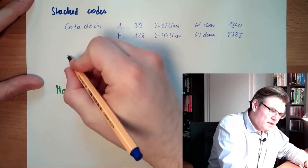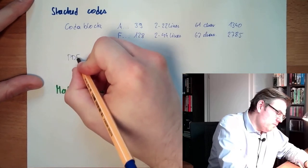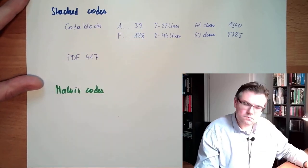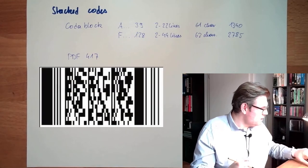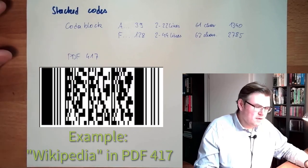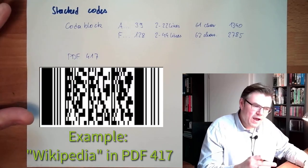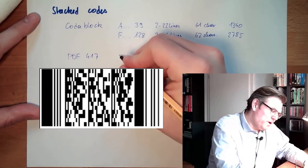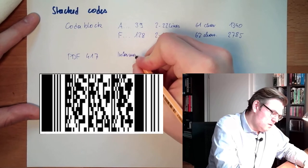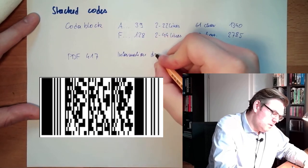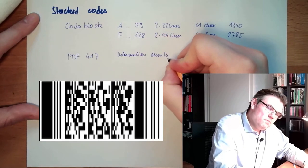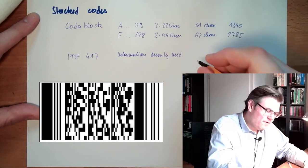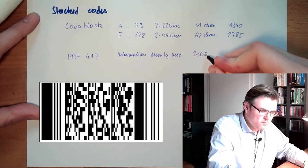Another form of stacked code is the PDF, Portable Document File 417. This is also a stacked code. It has pretty rigid constraints in alignment and information density is medium. We can have up to 2,000 characters which can be coded.